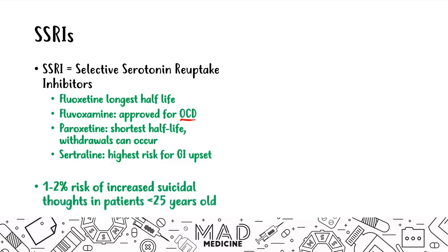There is a 1% to 2% risk of increased suicidal thoughts in patients less than 25 years old who are taking SSRIs. This is something you should have in the back of your mind when prescribing SSRIs to someone under 25 — you want to let that patient know they could have suicidal thoughts. It's pretty rare at 1% to 2%, but if they report increased suicidal thoughts after starting the drug, you'll know why, and for that we don't know the mechanism of action.